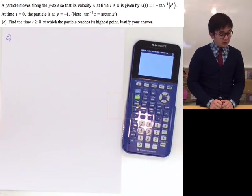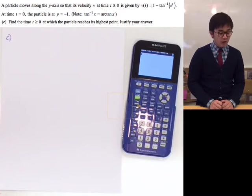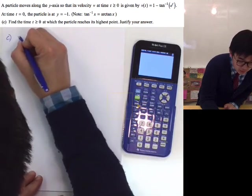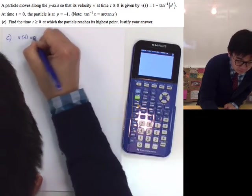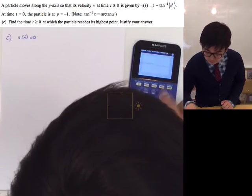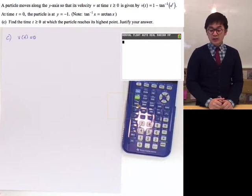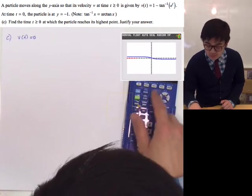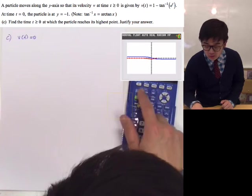For part C, we need to find where the particle reaches its highest point based on the velocity function. To check for the highest point, we find the critical number of our velocity function by checking the graph of v of t. Since our function is shown on the graph, let's use zoom fit to see how the function behaves.